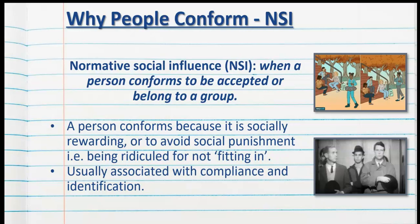A very good example of normative social influence is the elevator experiment, or adopting a new fashion trend. We do it because it's socially rewarding — we get compliments on wearing the latest fashion trend. And we don't want to be ridiculed for not fitting in, so appearing deviant from the group. It's usually associated with compliance — so publicly fitting in with the group but privately disagreeing — and identification, where we conform to the group we identify with at the time.